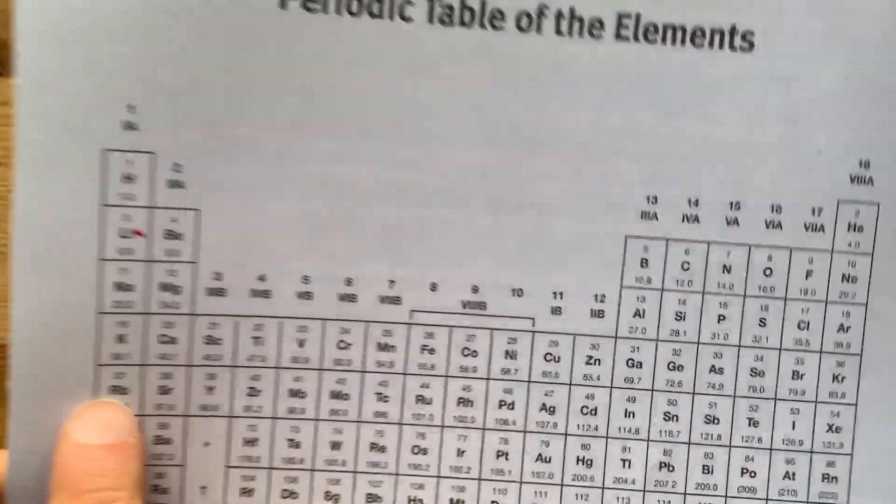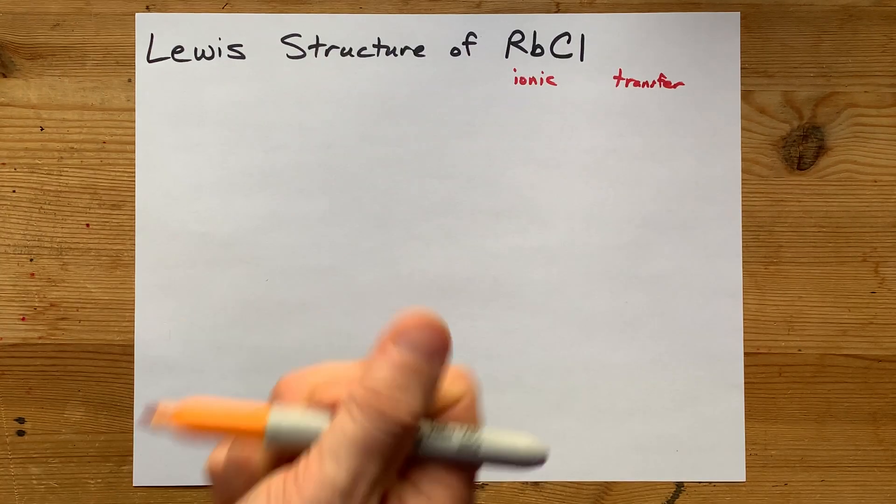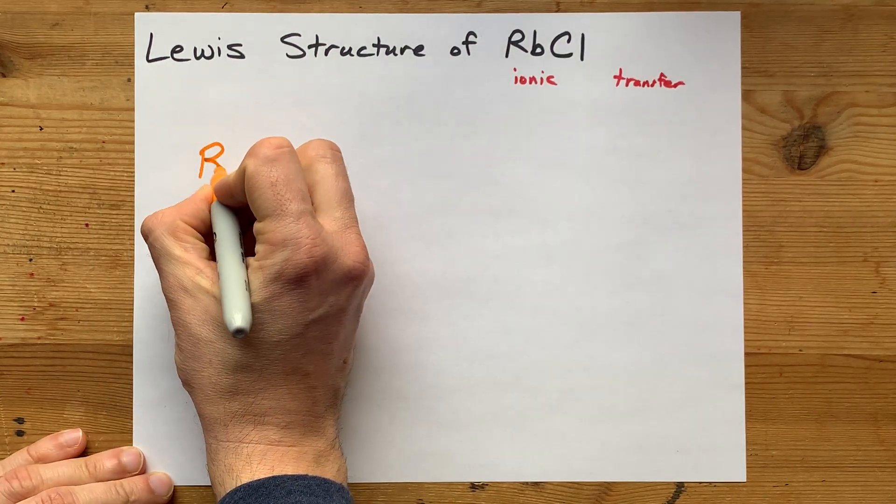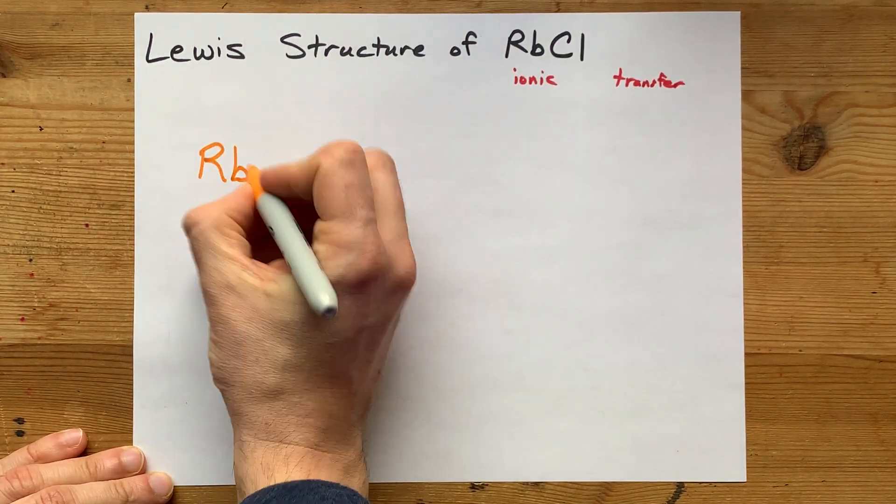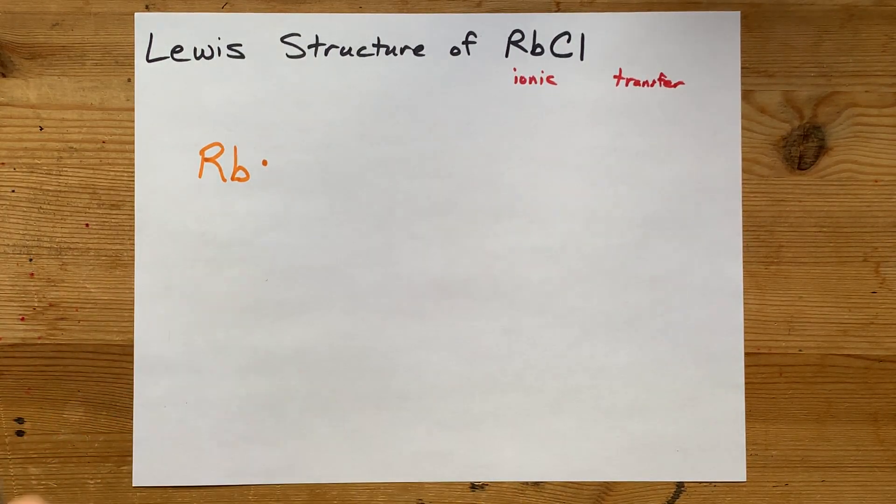Want to watch that happen? Well, rubidium is in group 1 of the periodic table, so it has one valence electron to start. Here's me drawing it with its one valence electron. Wow.